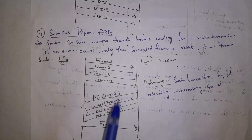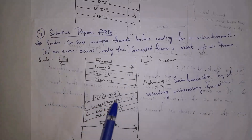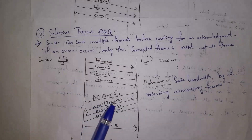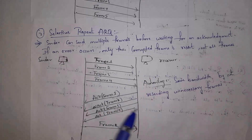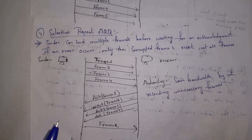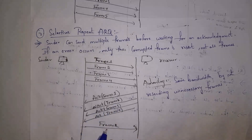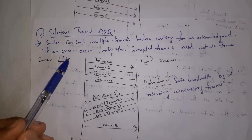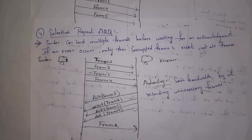Next I will explain what is selective repeat ARQ. In selective repeat ARQ, sender can also send multiple frames at a time, but sender will not resend all the frames — sender will send only the corrupted frame. For example, sender sends 4 frames at a time; receiver gets an error in frame 2, so receiver sends negative ACK only for frame 2. Since only frame 2 got negative ACK, sender will send only frame 2. This is all about selective repeat ARQ.